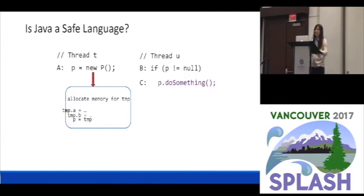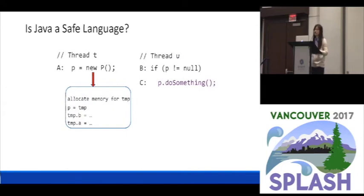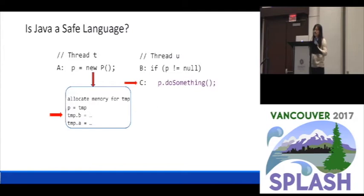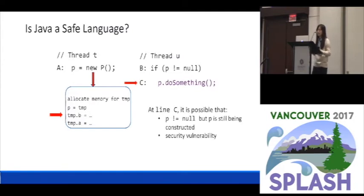For example, if these two instructions get reordered, now we have a problem. Because now it's possible that when thread U is executing, thread T is still initializing the object. Now we have a security vulnerability because we are exposing a partially constructed object, and thread U is actually seeing memory it is not supposed to see.